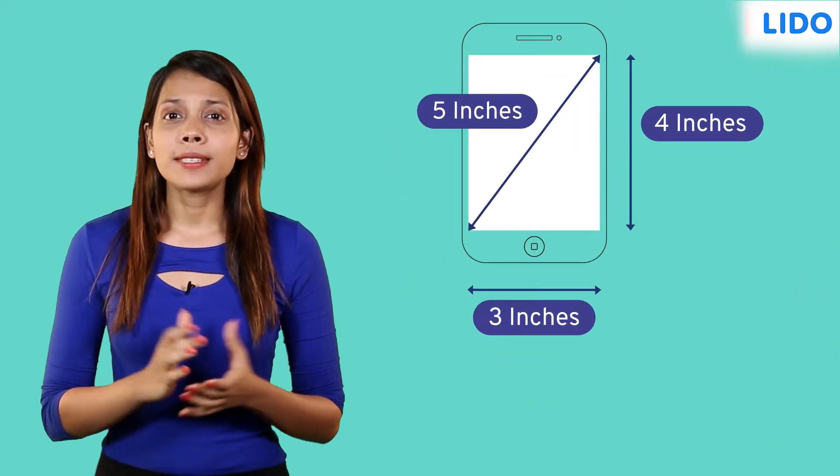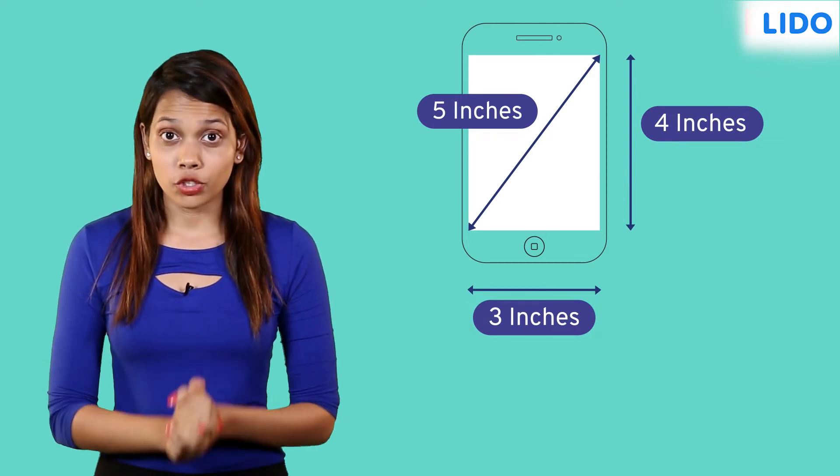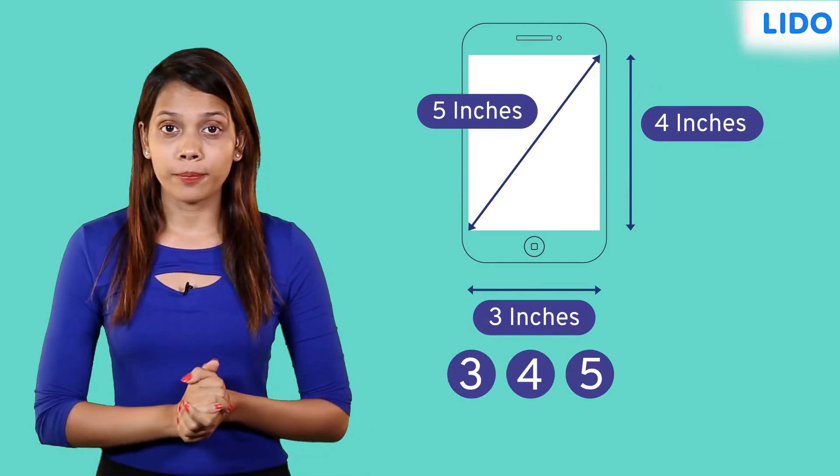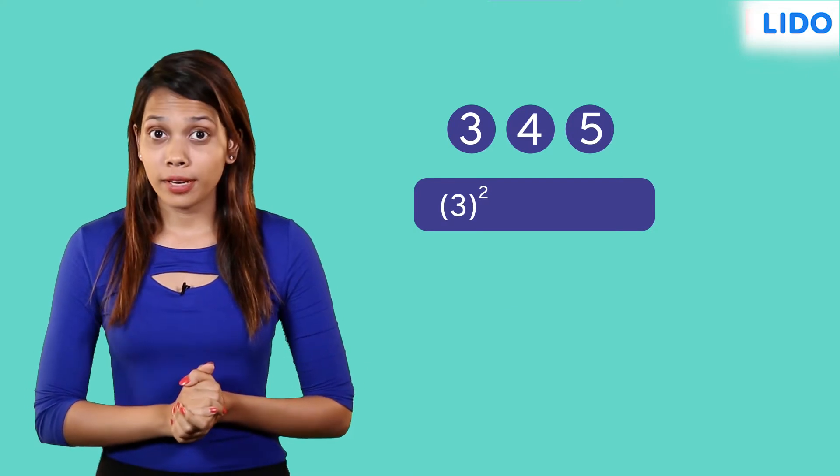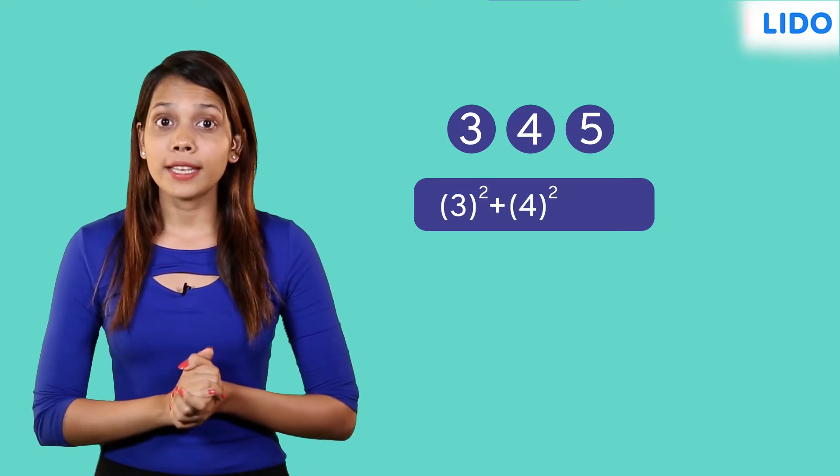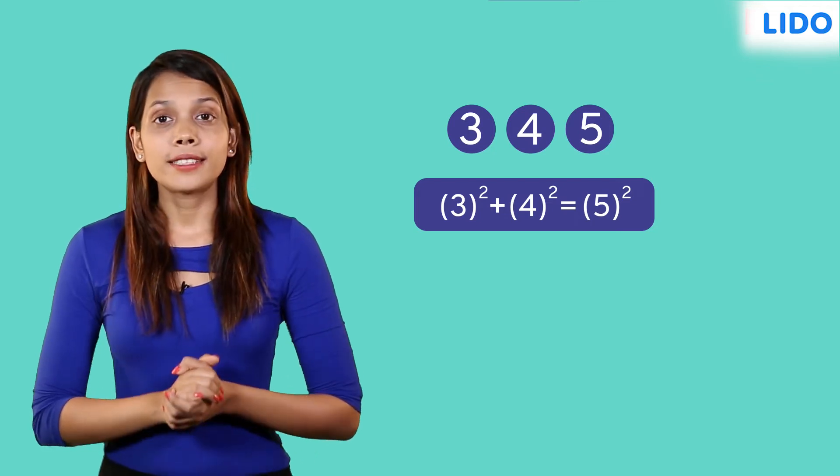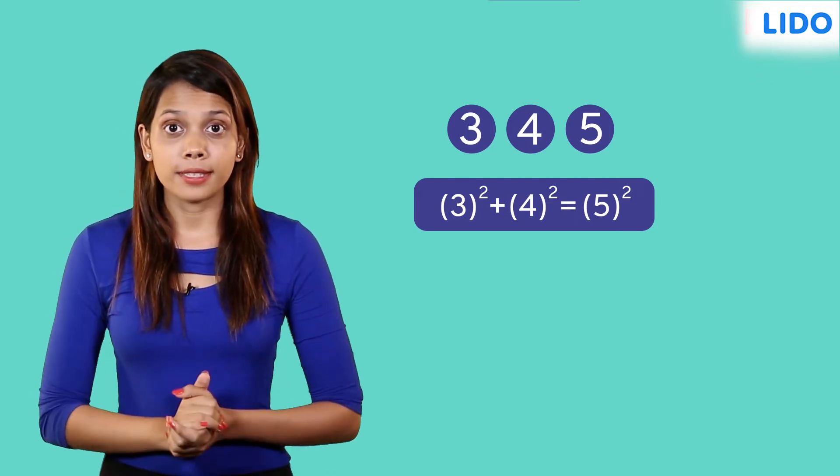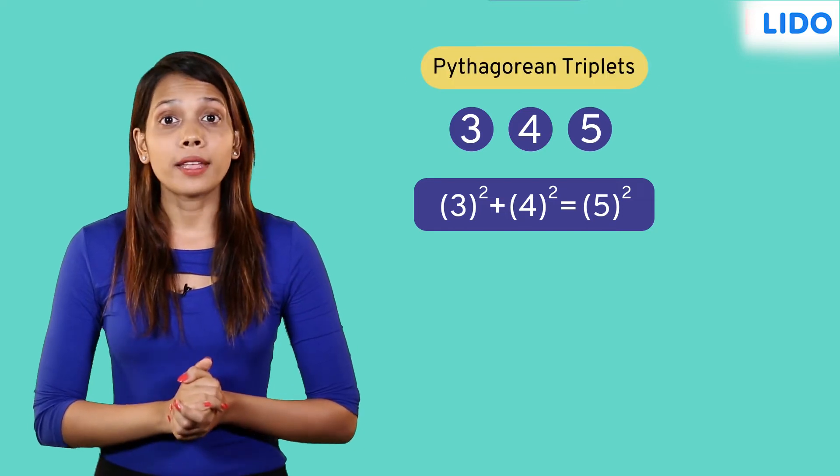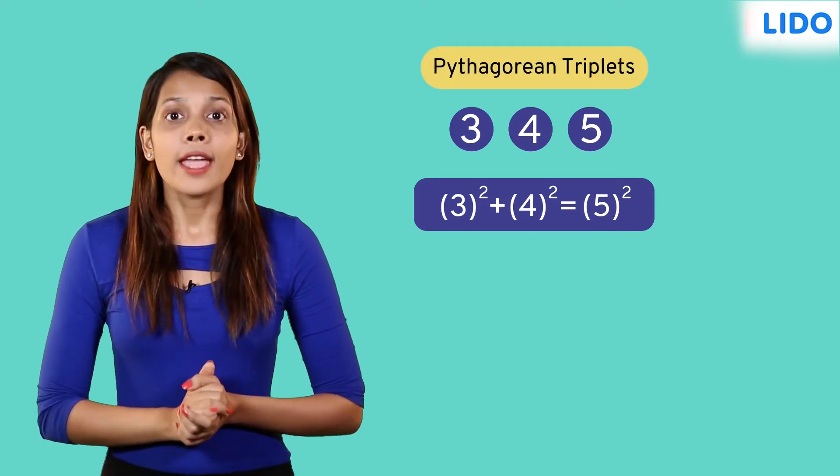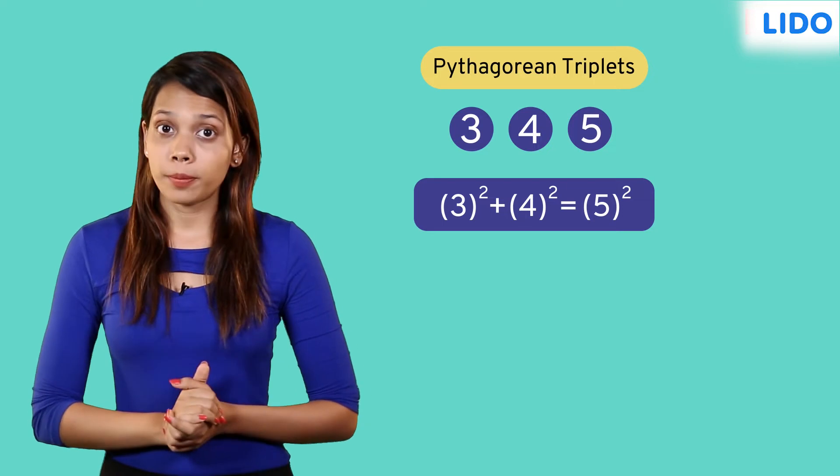She realized that there was something special about the combination 3, 4 and 5. The sum of the square of 3 and the square of 4 was equal to 25 which was the square of 5. Such combinations of 3 numbers like 3, 4 and 5 are called Pythagorean triplets. There are many such Pythagorean triplets.